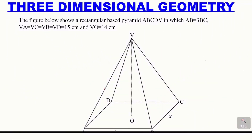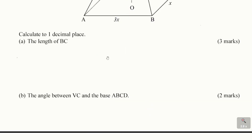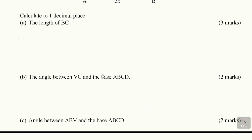Three-dimensional geometry. Let's solve this question. The figure below shows a rectangular-based pyramid ABCDV in which AB equals 3BC. VA equals VC equals VB equals VD equals 15 centimeters, and VO equals 14 centimeters. So we have the figure there. Calculate to one decimal place: A, the length of BC.